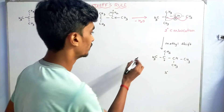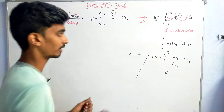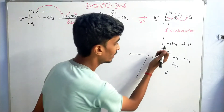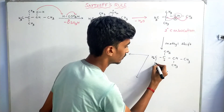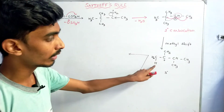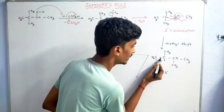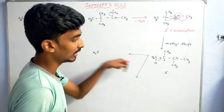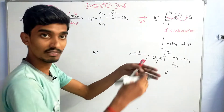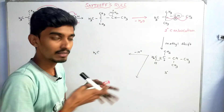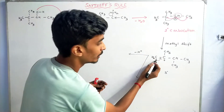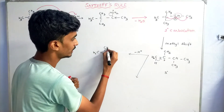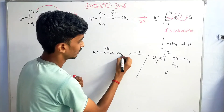From this tertiary carbocation, we need to form the products. If we look at one adjacent CH₂, a hydrogen can be removed — the bond shifts — and we get a double bond: C=CH₂. That gives one product. Looking at the CH₃ on the other adjacent carbon, removing a hydrogen gives another double bond: C(CH₃)=C(CH₃) type product.